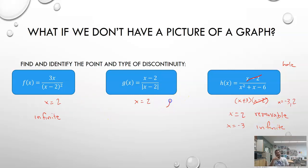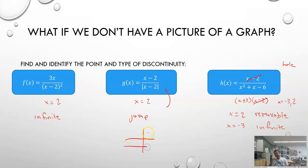When we have an absolute value on the top with the same expression as the bottom, instead of having an infinite discontinuity, we have a jump discontinuity. You can graph this on your calculator to see what's going on — the graph ends up looking like a straight line, then all of a sudden it jumps up. We can see what those y values are, which is why we call this a jump discontinuity rather than an infinite discontinuity.